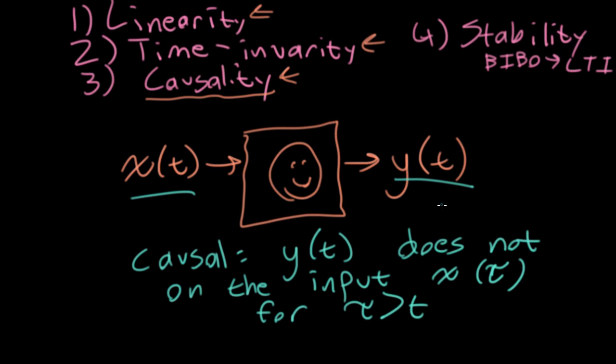It doesn't have to depend on past inputs, and it also doesn't have to depend on the current input. For instance, the system y(t) = 0, this nihilistic system, it's linear, it's time invariant, and it's also causal. It does not depend on future inputs. It also incidentally doesn't depend on current inputs or past inputs because it doesn't depend on any inputs at all.